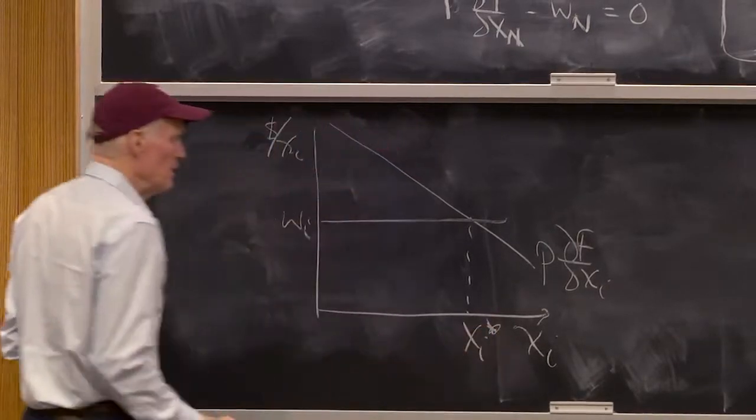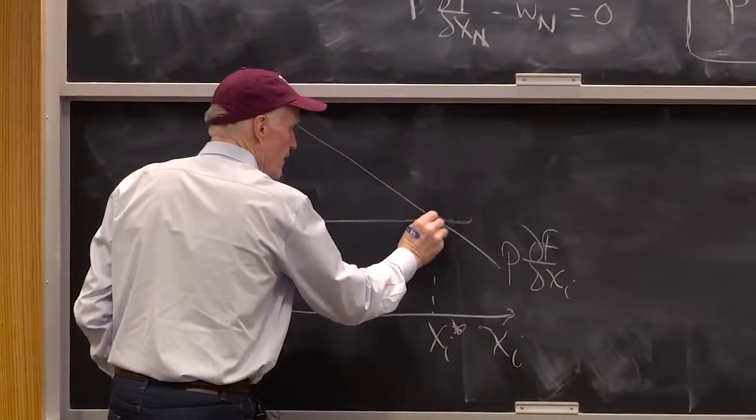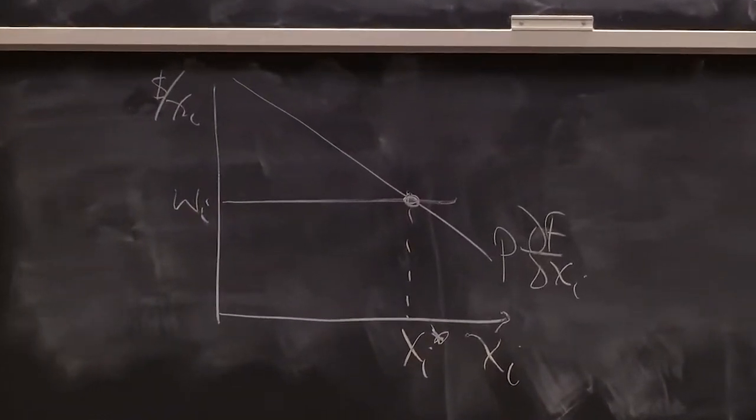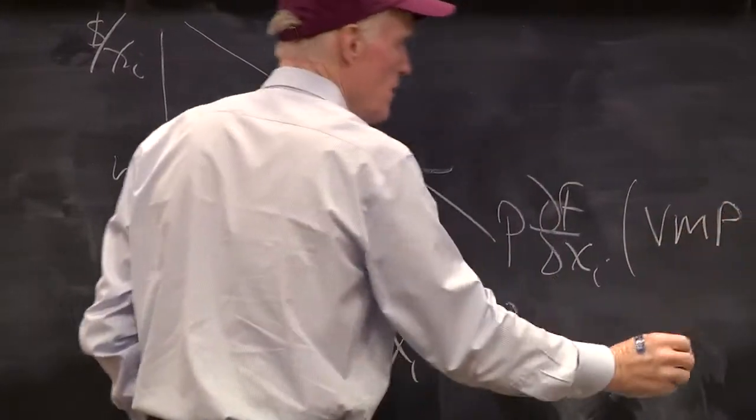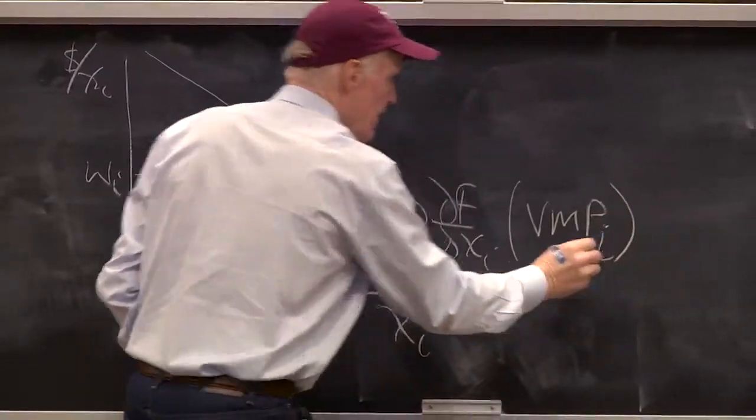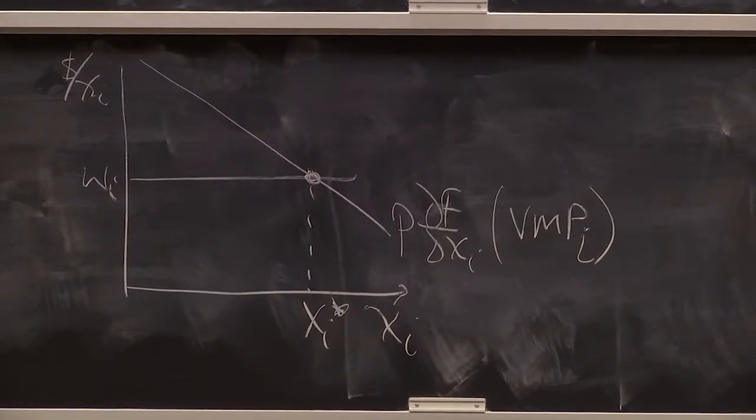That is, my equilibrium is going to have to look like that, where this, in fact, is, this schedule is often called the value marginal product schedule for i. That's the value of the marginal product produced by factor i.